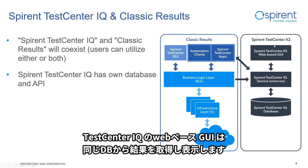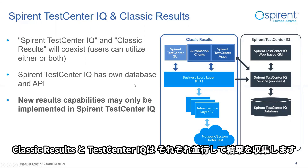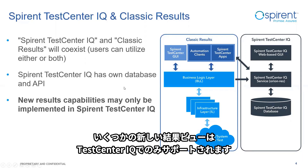The Test Center IQ web-based GUI retrieves these results using the same results service. Classic results and Test Center IQ operate side-by-side currently, but new results capabilities may only be implemented in Spirent Test Center IQ. Currently no date has been set, but classic results will become obsolete over time.